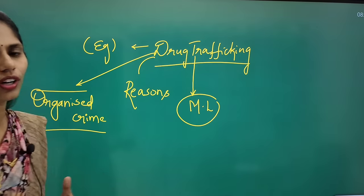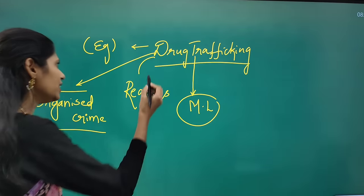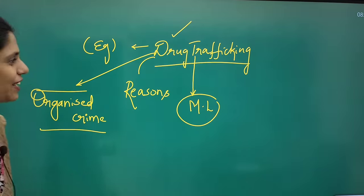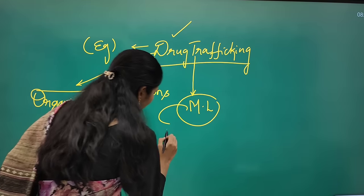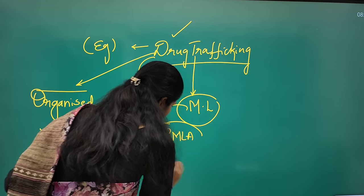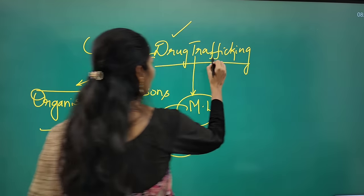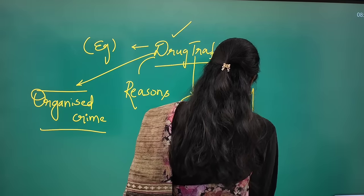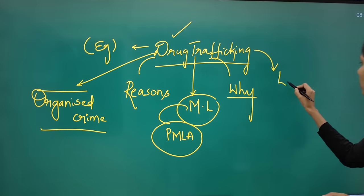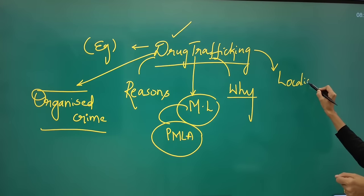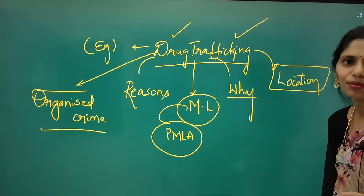Drug trafficking is also involved in money laundering — converting money obtained from illegal activities. Drug trafficking is one such illegal activity, so we can connect it with money laundering and in turn with the Prevention of Money Laundering Act (PMLA). You also have to see why drug trafficking is happening in India. From a geography point of view, you have to look at the location of India.